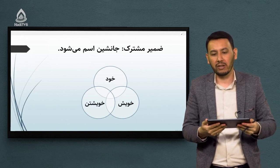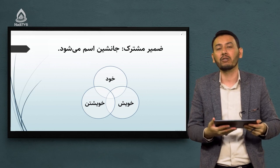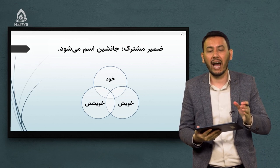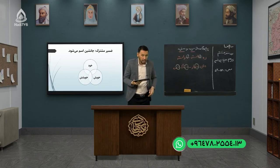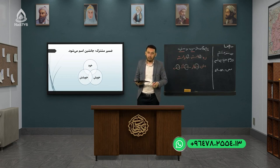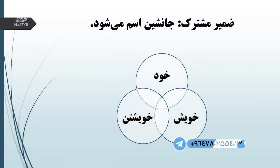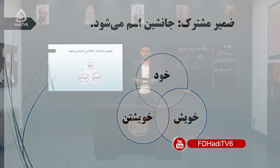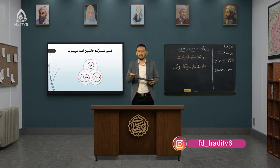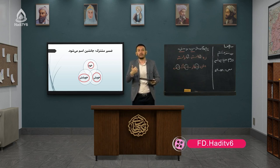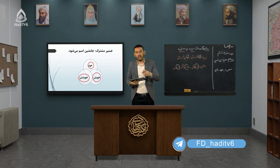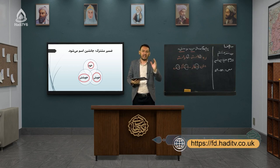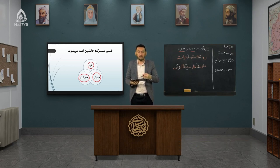ضمیر مشترک جانشین اسم میشود - اینجا دیگر نمیگوییم جانشین اسم انسان. ضمیرهای مشترک هستند که هم میتوانند برای انسان‌ها بیان شود هم برای غیر انسان‌ها. در حوزه ضمیر مشترک ما سه ضمیر داریم: «خود»، «خویش» و «خویشتن». این سه ضمیر میتوانیم هم بجای شخص اول، دوم، سوم مفرد و هم بجای شخص اول، دوم، سوم جمع استفاده کنیم.